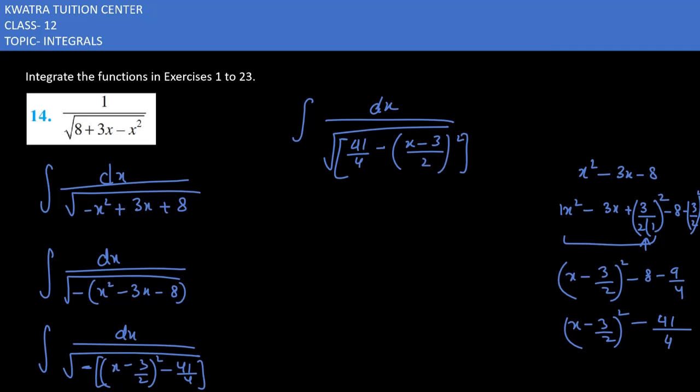How will you convert 41 over 4 in terms of a square? You can write root 41 over 2 squared.